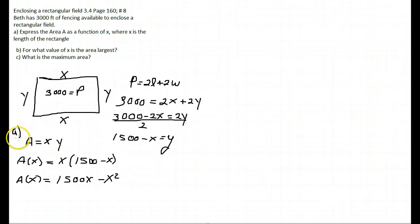Now, part B says, for what value of X is the area the largest? Well, if you think about this for a moment, if we were graphing this, since this has a minus X squared, we have an upside down parabola. So, we want to find the maximum value, so that means we are finding the vertex.